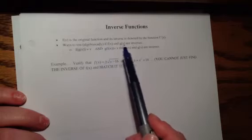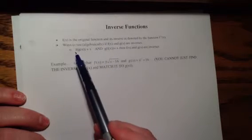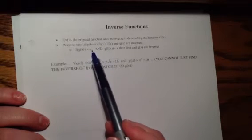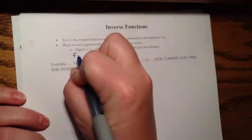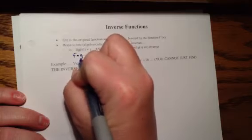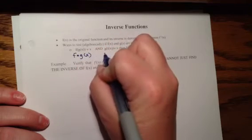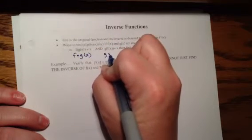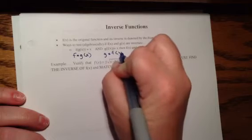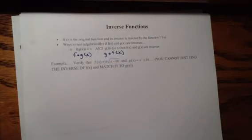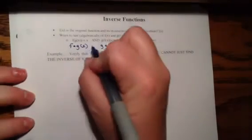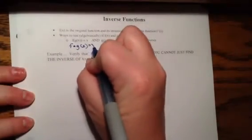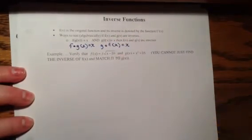To test algebraically if f and g are inverses, f of g of x has to equal x, and g of f of x has to equal x. We sometimes write these as f open circle g of x, and g open circle f of x — your teacher may have called these 'fog and gof.' Both have to equal x.